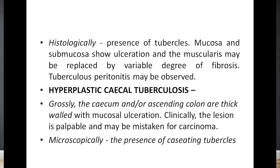Tuberculosis peritonitis may also be seen. In hyperplastic cecal tuberculosis, grossly the cecum or ascending colon are thickened with mucosal ulceration. Clinically, the lesion is palpable and may be mistaken for carcinoma. Microscopically, the presence of caseating tubercles will be seen.